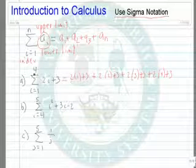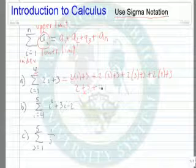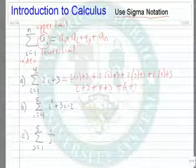And then we stop since we have reached our upper limit. So we have 2 plus 3, plus 4 plus 3, plus 6 plus 3, plus 8 plus 3.